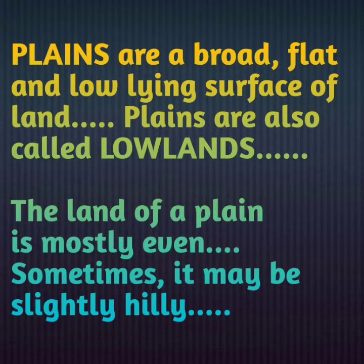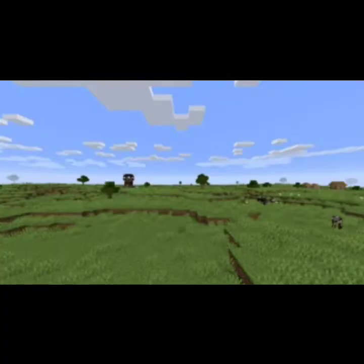Plains are a broad, flat, low-lying surface of land. Plains are also called lowlands. We have studied two physical features — mountains and plateaus — and both of them are high. Mountains are very high, and as compared to mountains, plateaus have a little less height. But plains have no height; they are height-less, low-lying lands that are flat and very vast. If you look far, you will see a flat land — that is why they are known as lowlands.